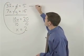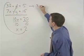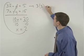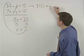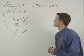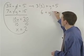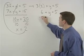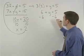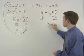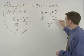that gives us 3 times 2 plus y equals 5. This simplifies to 6 plus y equals 5, and subtracting 6 from both sides gives us y equals negative 1.